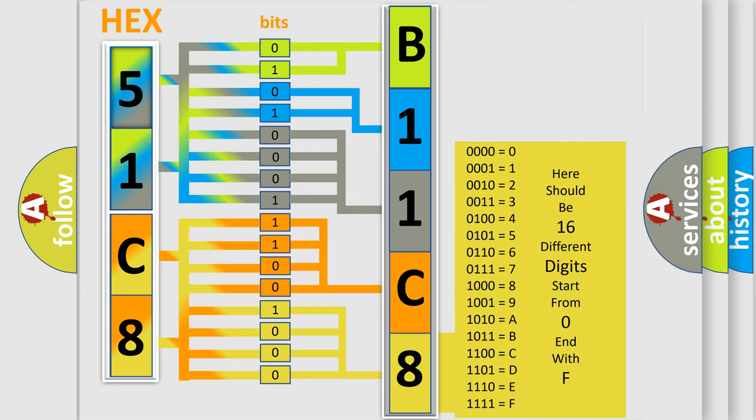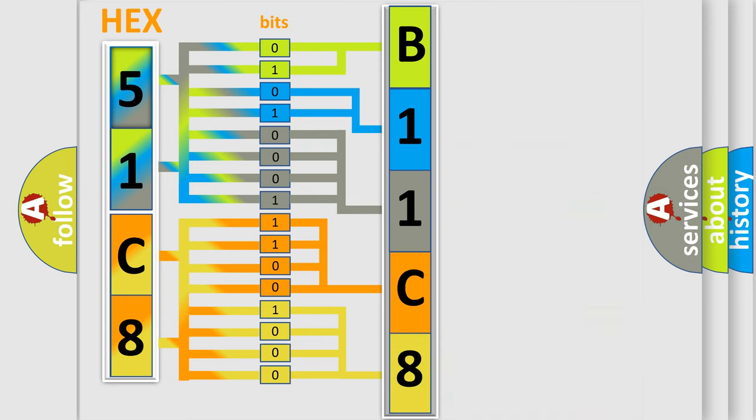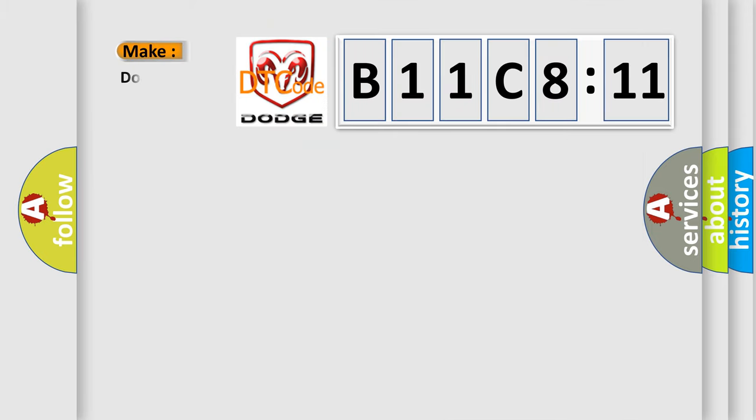We now know in what way the diagnostic tool translates the received information into a more comprehensible format. The number itself does not make sense to us if we cannot assign information about what it actually expresses. So, what does the diagnostic trouble code B11C8:11 interpret specifically?